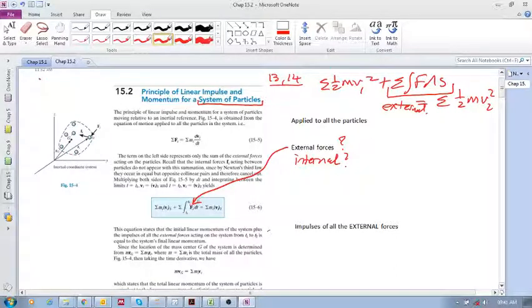And we only consider the impulses due to the external forces. And then, we calculate the sum, or we have the momentum, of each particle at state 2. So we only consider impulses of the external forces.